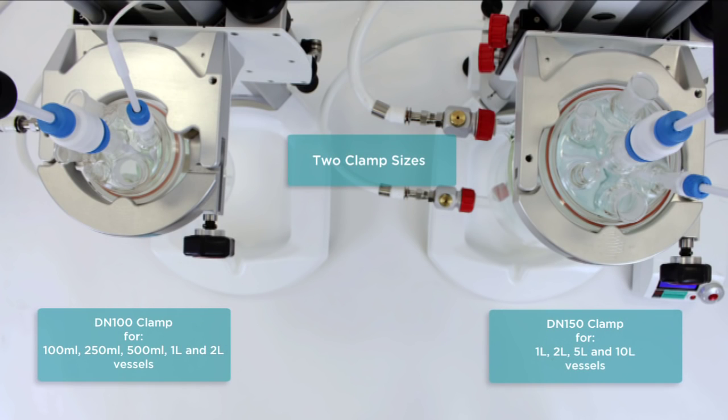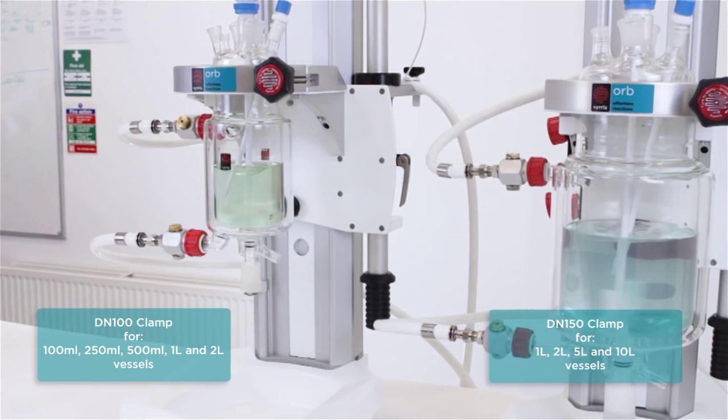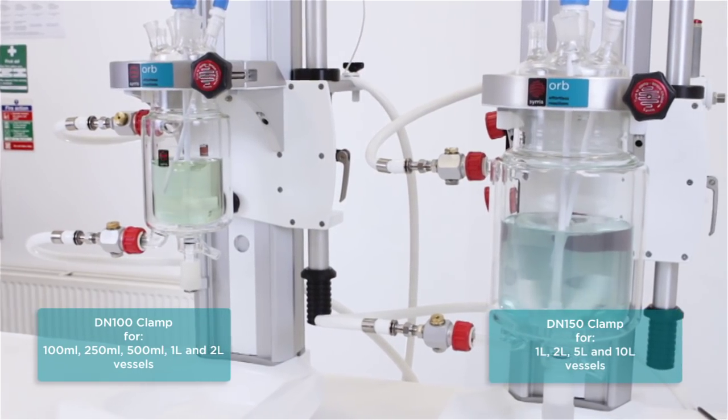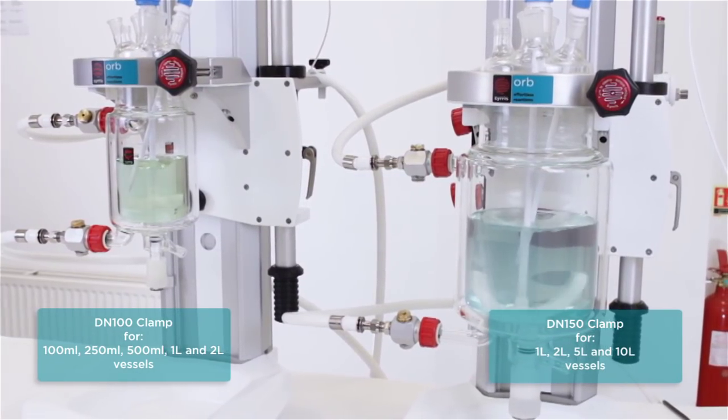Orb features two clamp sizes, which can be quickly and easily interchanged to accommodate a wide range of vessels from 100 millilitres to 10 litres.